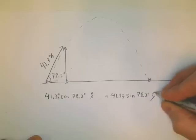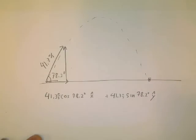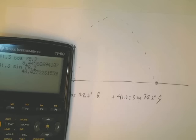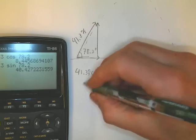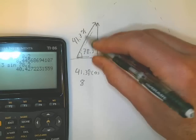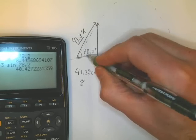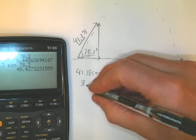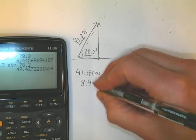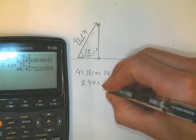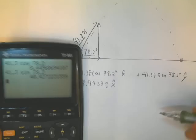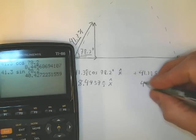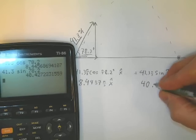We can do this on our calculator. This guy is going to be 8.4457 meters per second in the x direction. We have three sig figs here and three sig figs there, so our answer should be about five sig figs. Then this guy is 40.427 meters per second in the y direction.